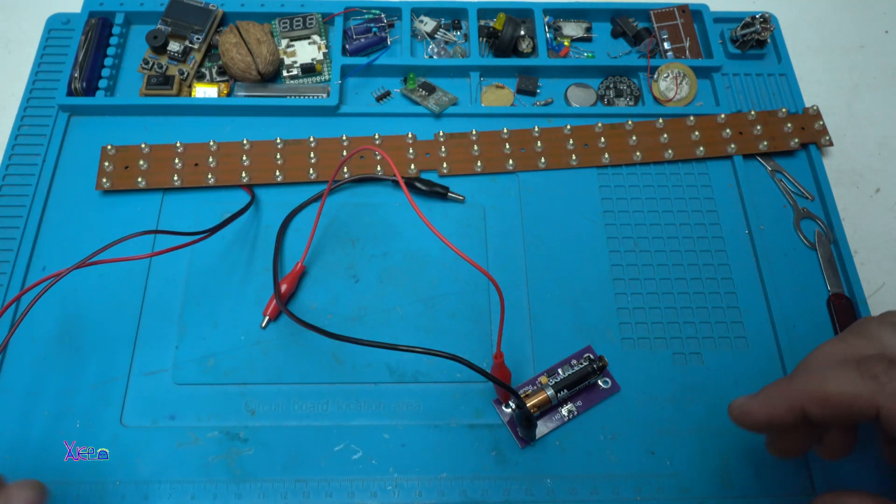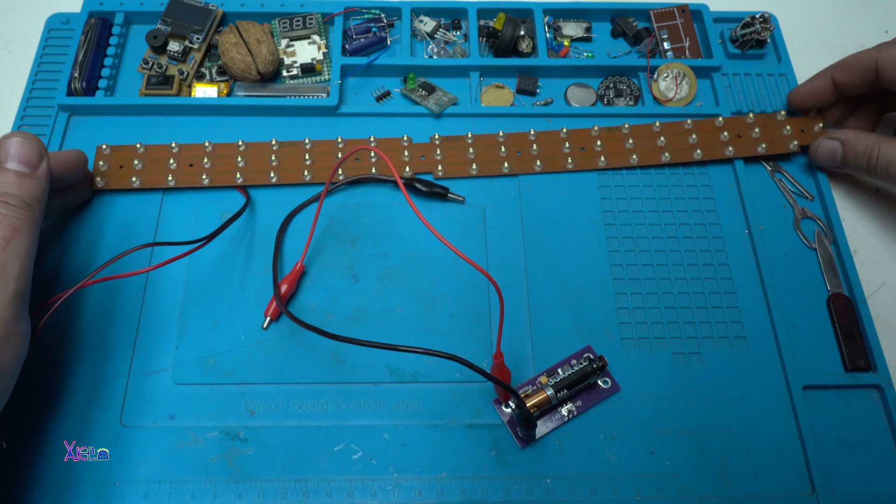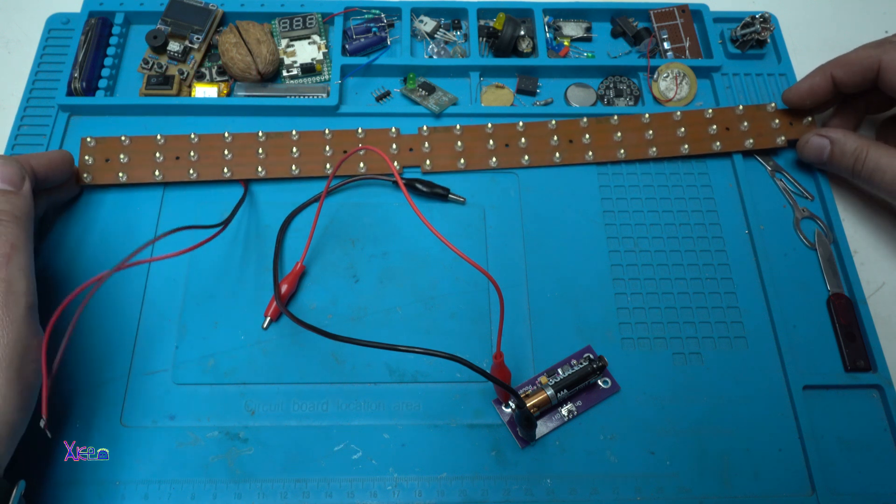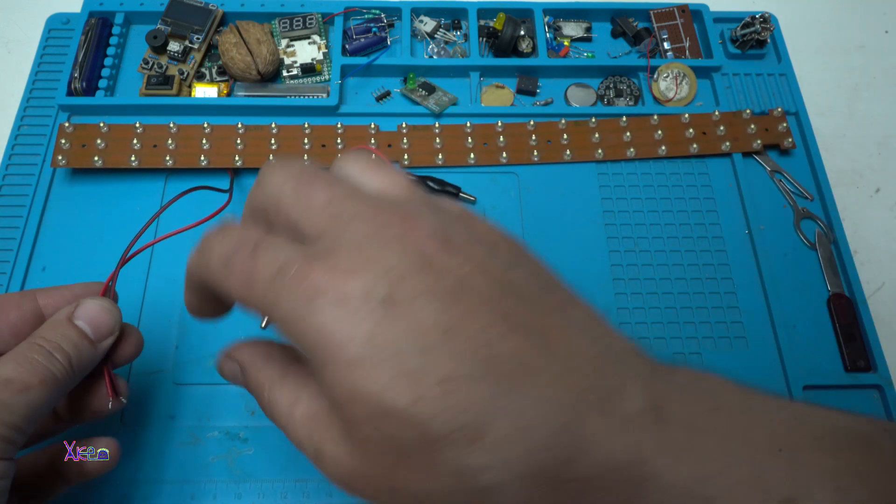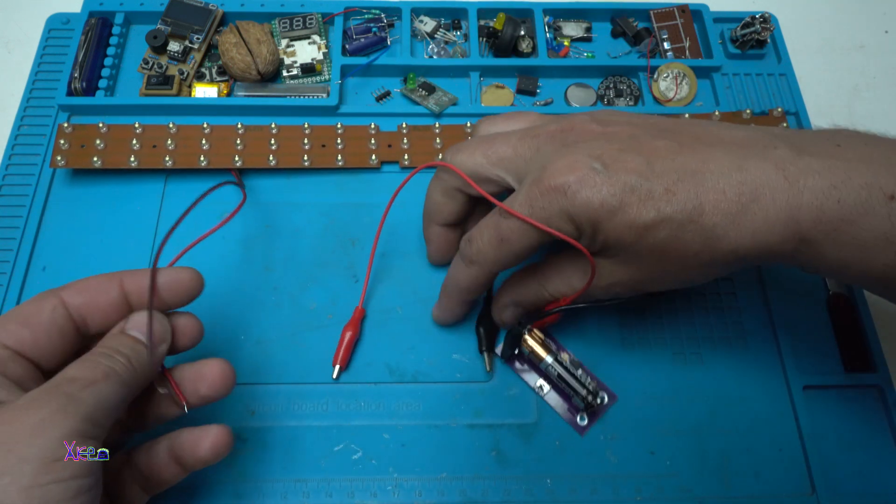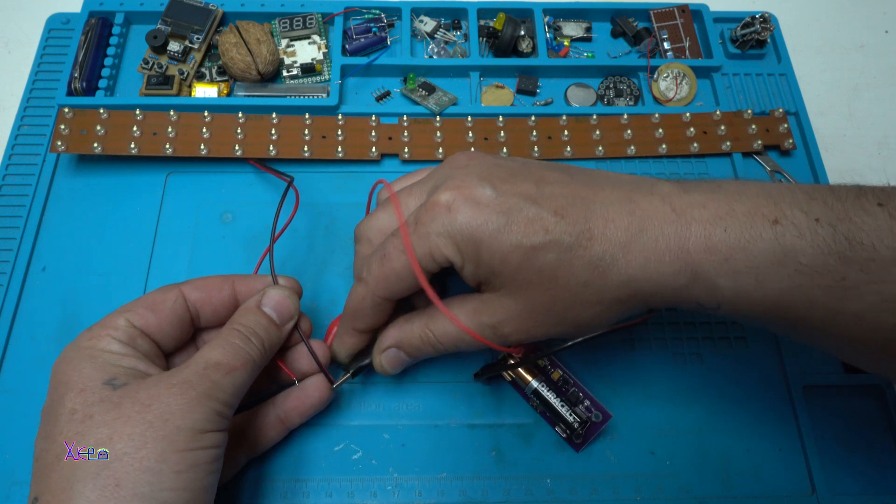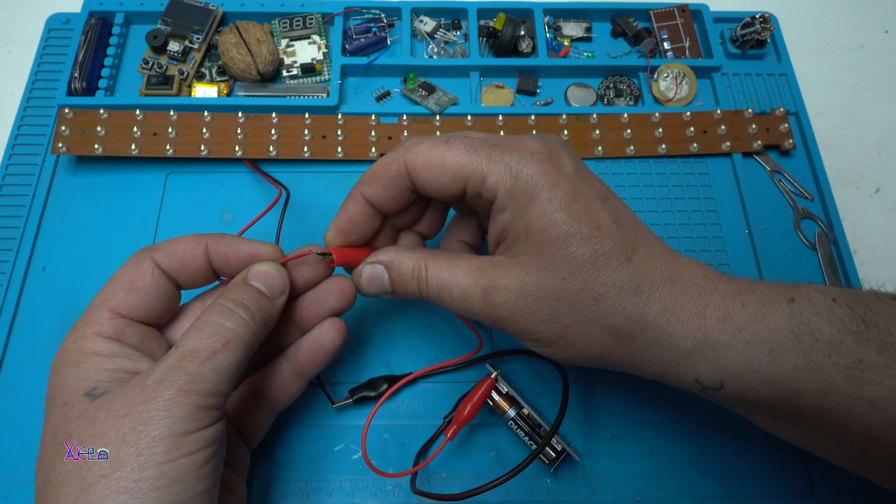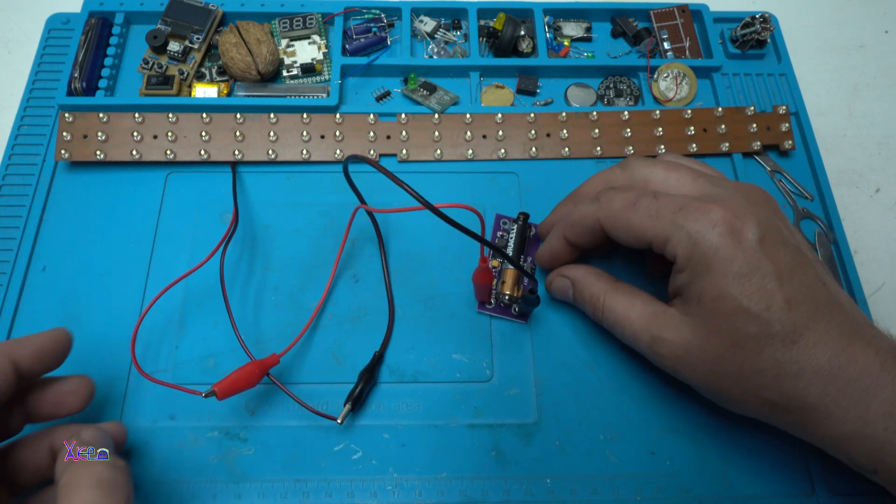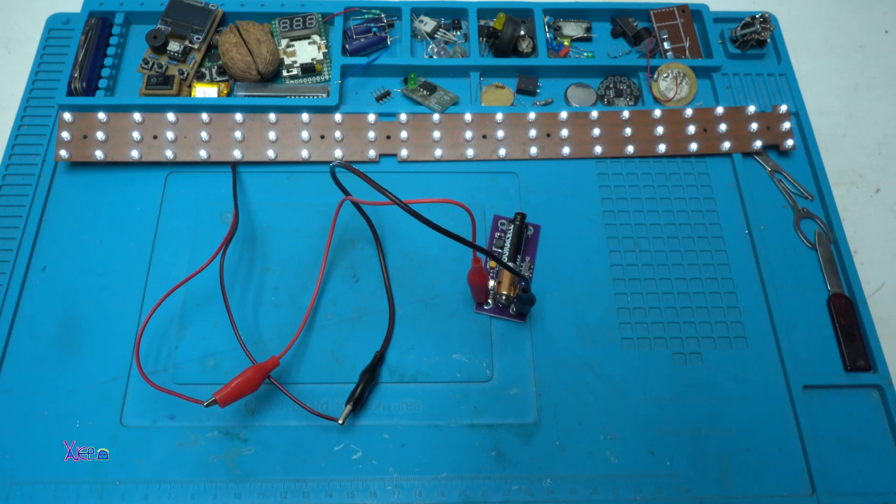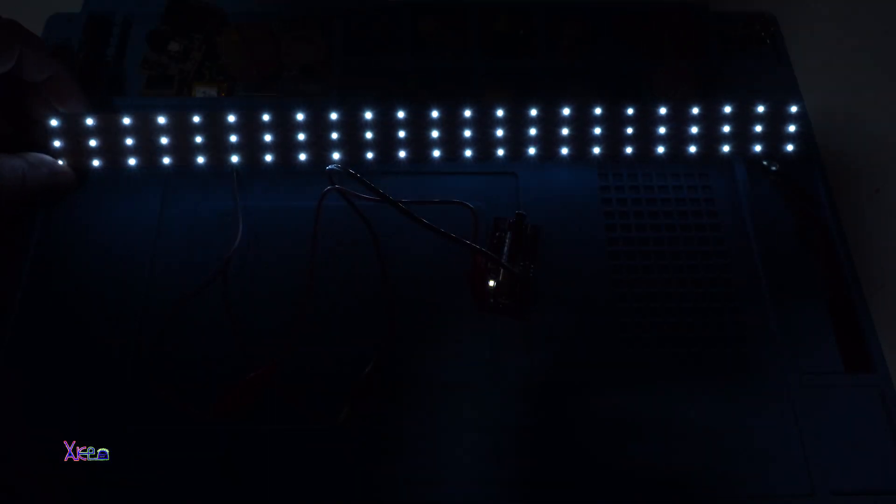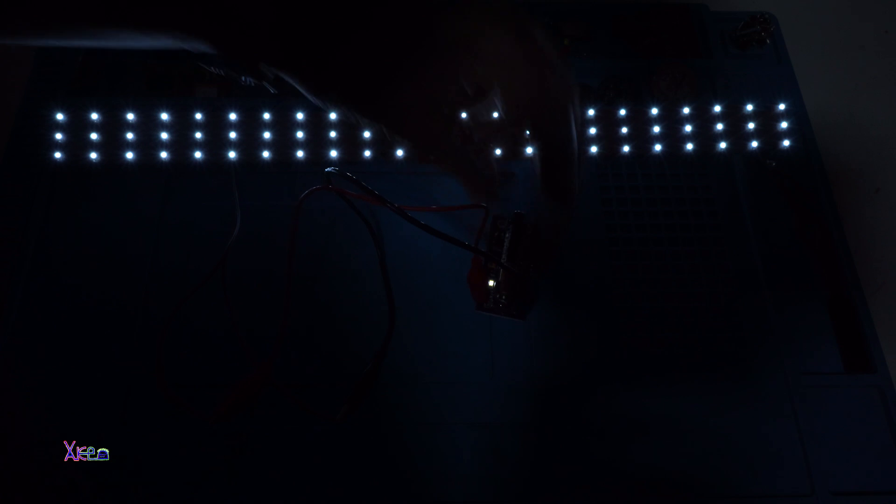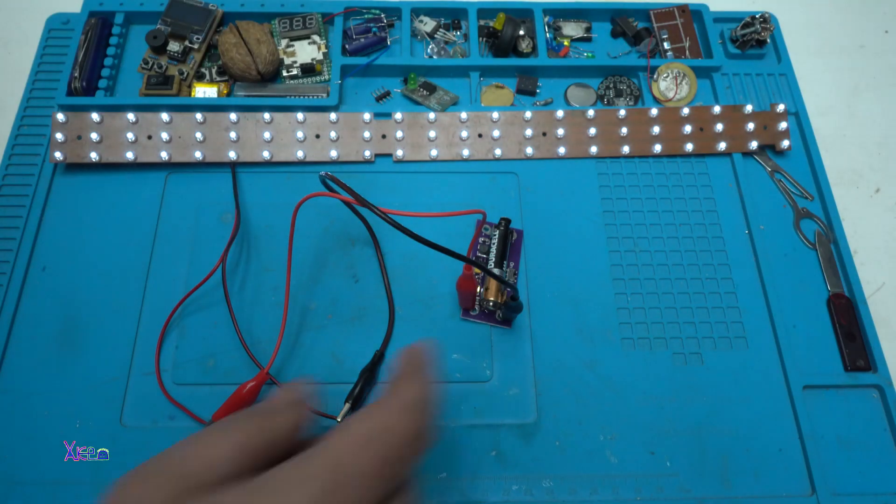One more test. Here I have 70 white LEDs. This is pulled out from an old LED lamp. Let's see, does it light? Turning on. Look. 70 white LEDs with one small DC booster module.